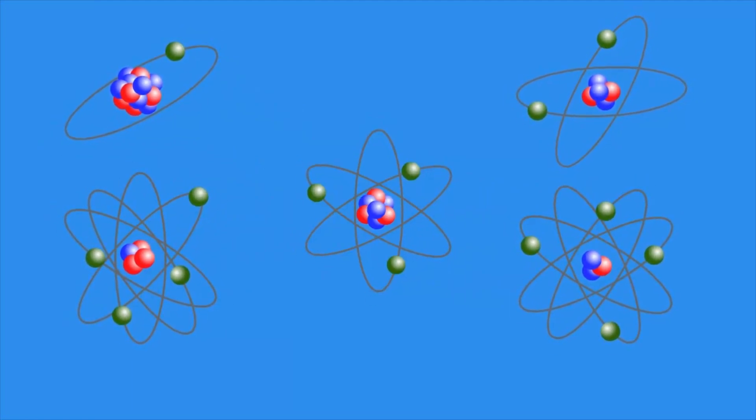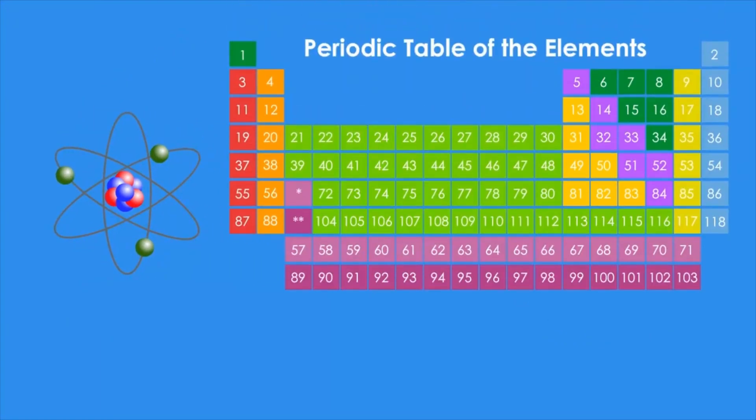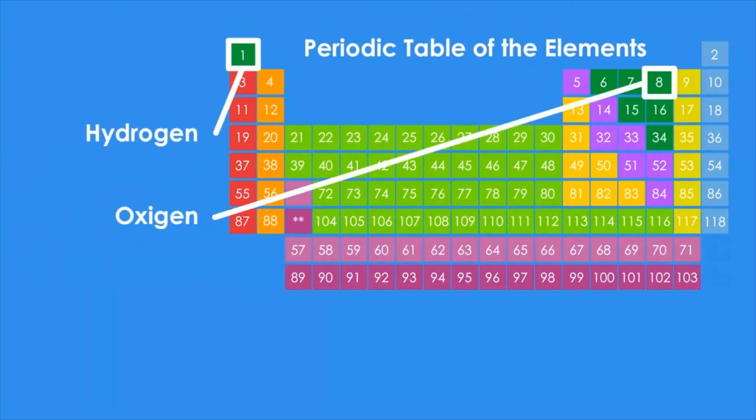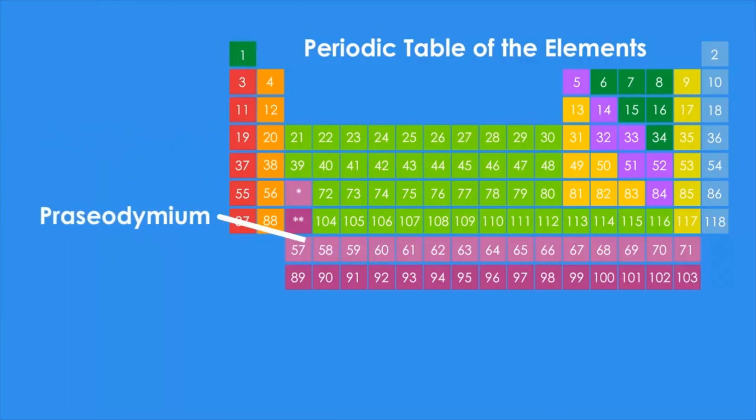To classify and study all the atoms known, they've been grouped into a table known as the periodic table of the elements. You'll find well-known atoms such as oxygen and hydrogen, and also others with strange names like praseodymium or wolfram.